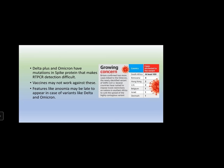Britain confirmed two more cases linked to Omicron. South Africa has reported at least 100 cases. South Africa may not be where Omicron originated — it may just be where it was first detected. Botswana reported 4, Hong Kong 2, UK, Belgium, Israel, Denmark. India has also recorded about 21 cases. It is now spreading like wildfire and Omicron may become the dominant species in a matter of few days.